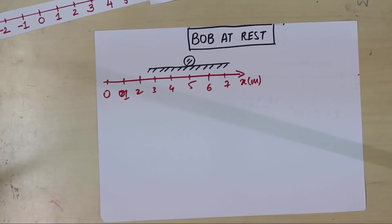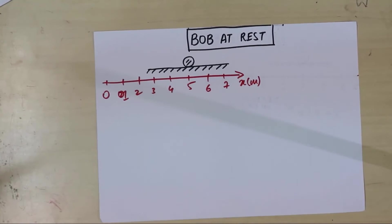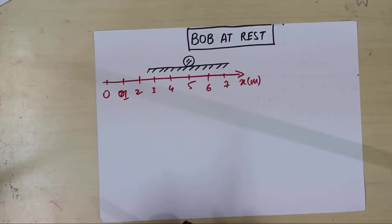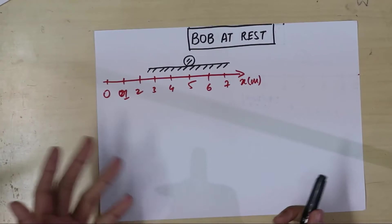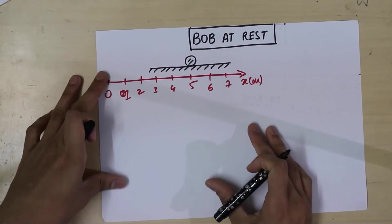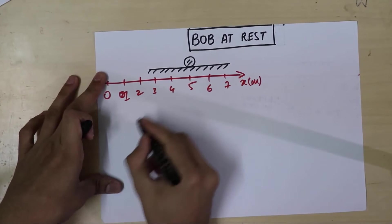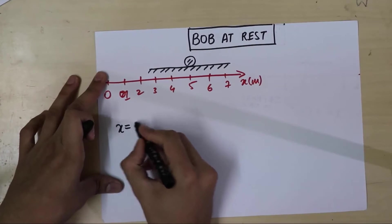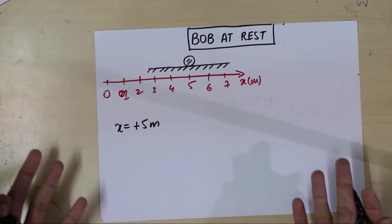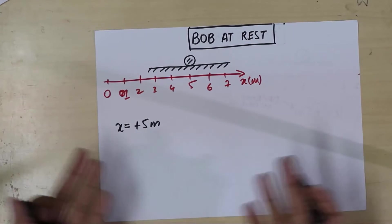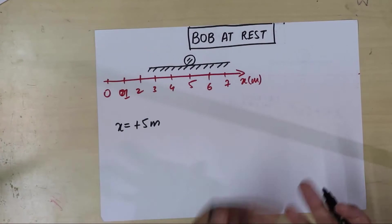Alright, we are now set to build equations. So what we will do is, all the time we will ask Bob, 'Hey Bob, where are you?' And Bob says, 'Well, I am at x equal to plus 5 meters.' So right now, Bob is at x equal to plus 5 meters. Ta-da! That's it. That's the equation of Bob at rest.